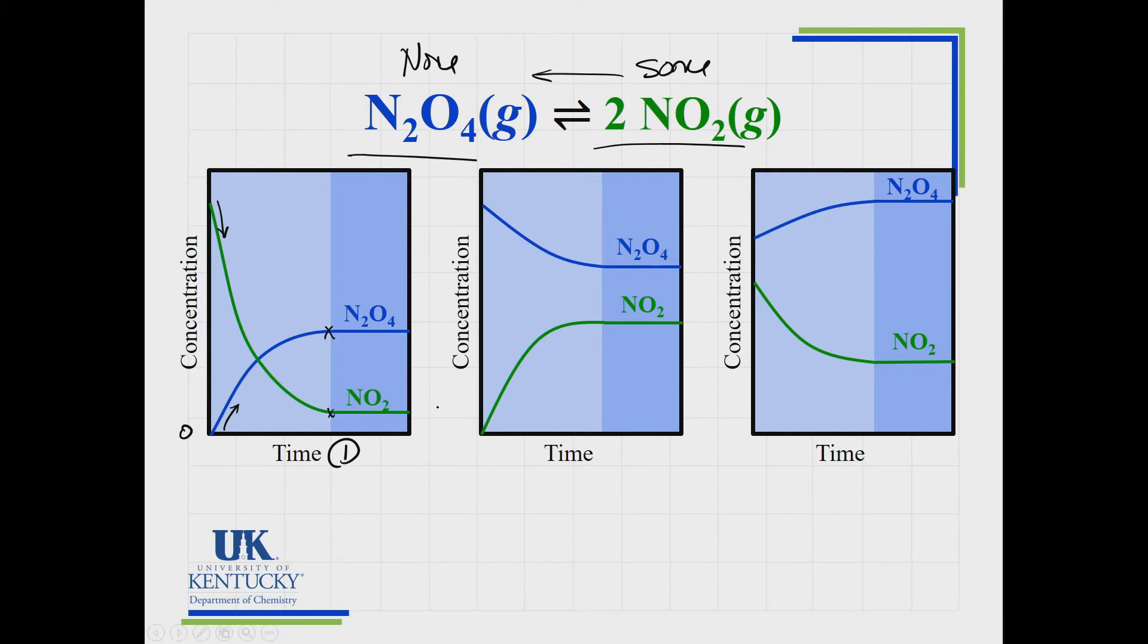In image number two, we are starting with some of N2O4 and none of NO2. At first, all we can do is use up some of this, so it starts going in this direction. As soon as you produce some of the green, which is the NO2, then it can react. So its concentration is going to be going up. This guy is going to come down until they both are the same.